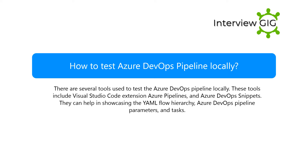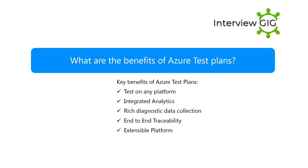How to test Azure DevOps Pipeline locally? There are several tools used to test the Azure DevOps Pipeline locally. These tools include Visual Studio Code Extension, Azure Pipelines, and Azure DevOps Snippets. They can help in showcasing the YAML flow hierarchy, Azure DevOps Pipeline parameters, and tasks.